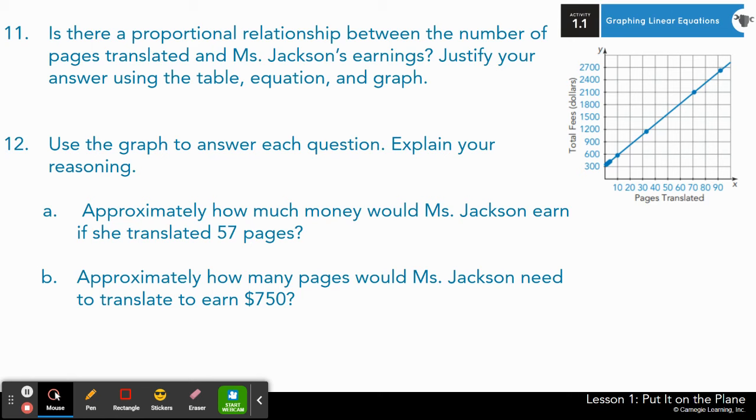Now for 11, you learned way back in earlier, in the beginning of the year, what a proportional relationship looks like on the graph. It must be, or must have two things. And then for 12, approximate your answer, meaning it does not have to be exact, but estimate for 57 pages about how much money would that be looking at the graph. This shouldn't take you long at all. Take one minute to answer 11 and 12, either on your own or with a partner. Pause here.